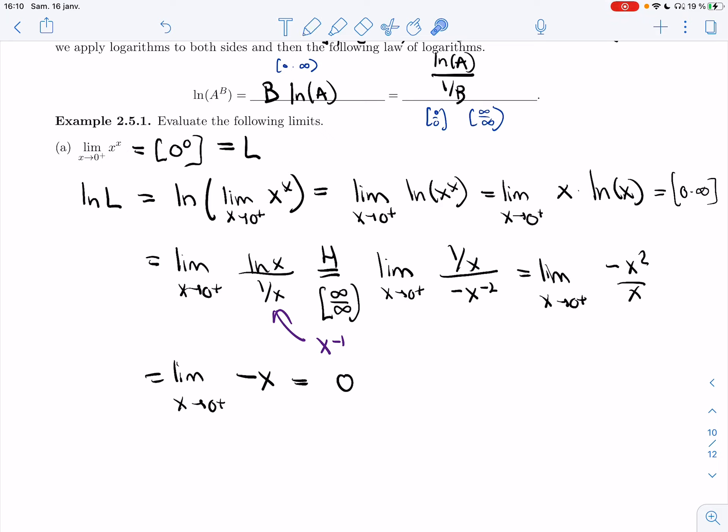So by applying log, I was able to bring the exponent down to turn it into a product, which I then solved using the method of section 2.3. And now I got 0. But 0 is not the limit we want. This is log of L. It's ln of L. So now we need to read the value of L from this ln of L.